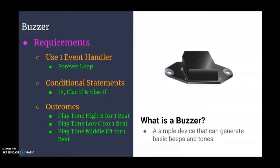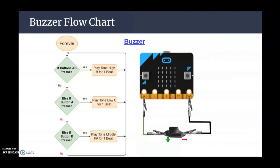For today's program, we're going to create a continuous loop using a forever loop, and we're going to use three conditional statements in order to play a series of tones. Looking at our flowchart, if the A+B button is pressed, we're going to play a tone of a high B for one beat. If the A button is pressed, we're going to play a tone of a low C for one beat. And if the B button is pressed, we're going to play a middle F sharp for one beat.